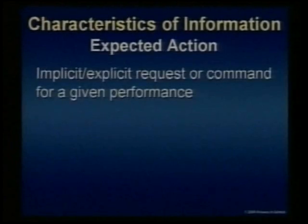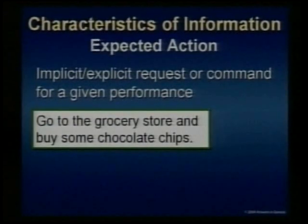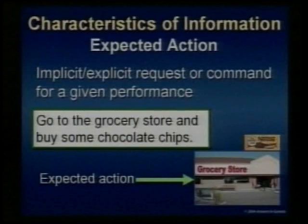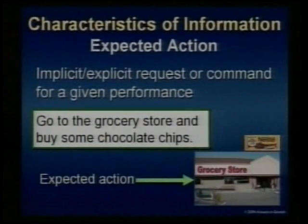So we have code and we have meaning — two characteristics of information. What we are doing is building to a universal definition, then we're going to apply that universal definition and come up with some very exciting conclusions. A third characteristic of information is something called expected action, which is an implicit or explicit request or command for a given performance. For example: go to the grocery store and buy some chocolate chips. The expected action is that someone will go to the grocery store and buy some chocolate chips. Whether that is carried out or not is irrelevant, but there is an expected action in information. So we have a code, we have a meaning, and we have an expected action.